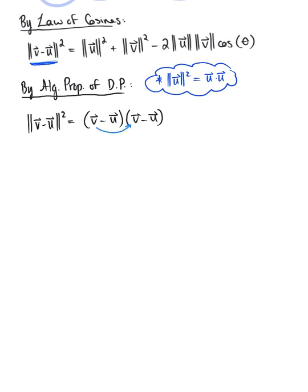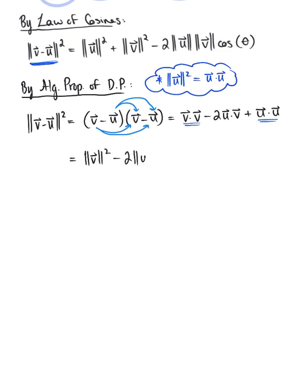Foiling this out, we get: vector v · vector v minus 2 times vector u · vector v plus vector u · vector u. Applying the same algebraic property to the first and last terms, this rewrites as the magnitude of vector v squared minus 2 times (vector u · vector v) plus the magnitude of vector u squared.